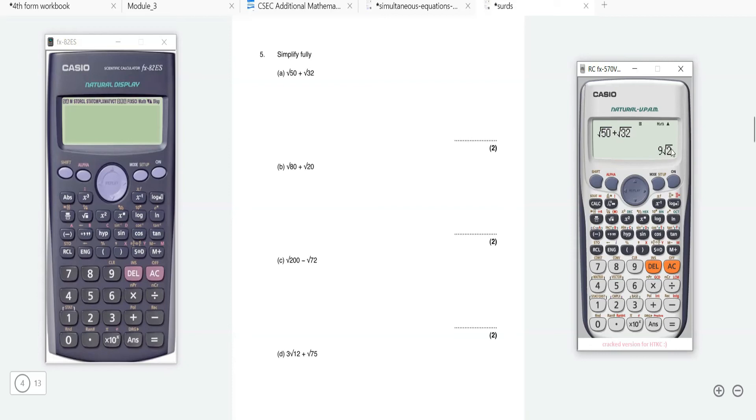It's simplified for you - maybe you'll get this in a multiple choice question. Let's look at number two: you have the root of 80 plus the root of 20. You can just put it in your calculator and it works it out for you, nice and easy.